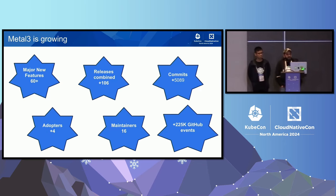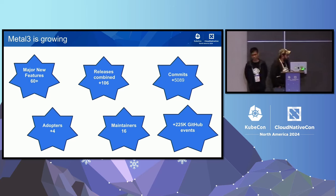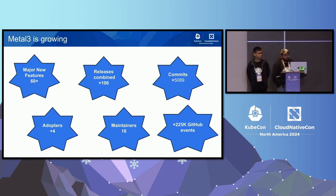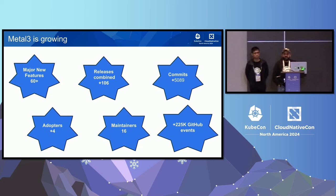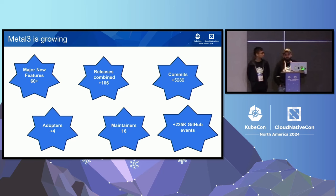When it comes to growth, since its inception, MetalCube has been growing its momentum quite steadily. It has around 60-plus great features that have been added. Our release processes have been streamlined. We have strategically placed some of the component releases with the Cluster API, because we also have a Cluster API provider for MetalCube. One of the components, Ironic, is also loosely coupled with the release of OpenStack Ironic. And then we have components like BareMetal Operator, which has its own independent release cycle.